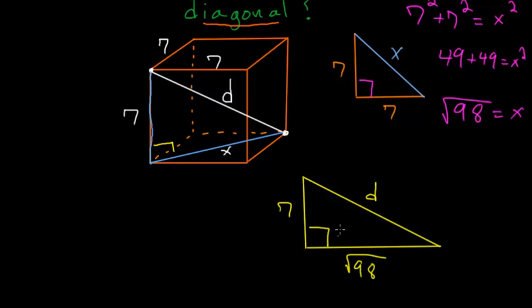And again, since this is a right triangle, we'll use the Pythagorean theorem. We have 7 squared plus the square root of 98 squared, and this is equal to D squared.